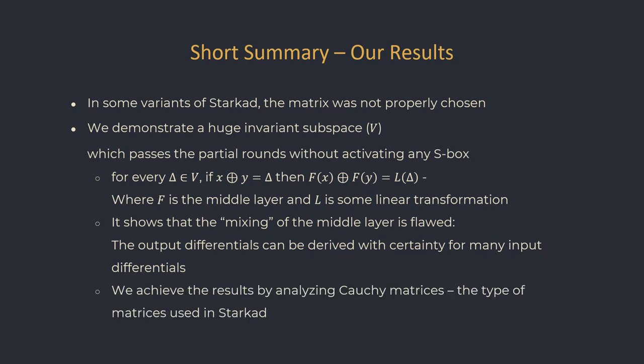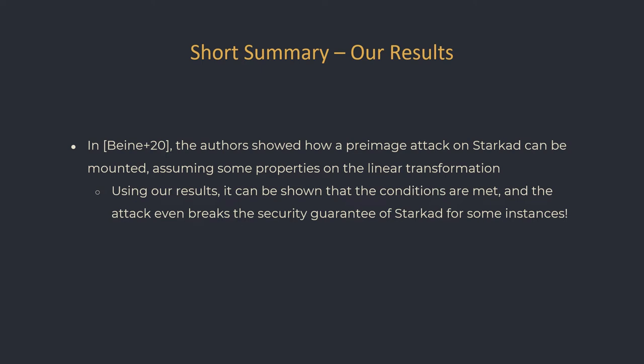This is obviously an undesirable property of the cipher. As we'll see later in the presentation, we get this result by an analysis of Cauchy matrices, which is the family of matrices the authors of Starkad chose to use. In a paper by Vane et al. which appeared in Crypto 2020, the authors show how to attack Starkad assuming the Starkad matrix satisfies some conditions. We show that these conditions fail for some of the variants, which breaks the security guarantees of the cipher for some of the parameters.